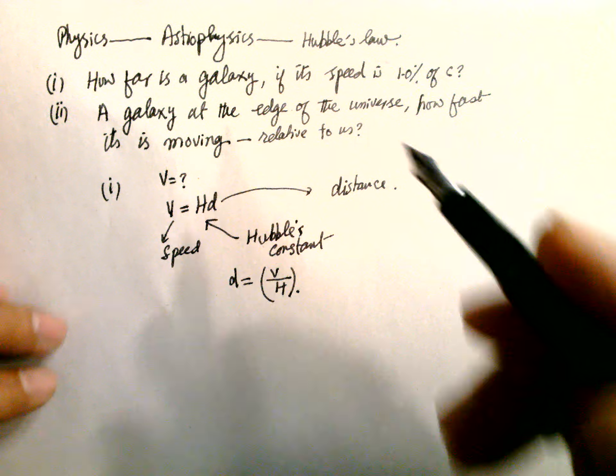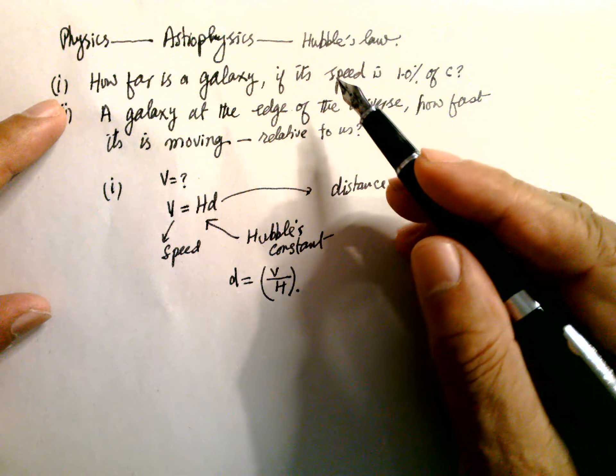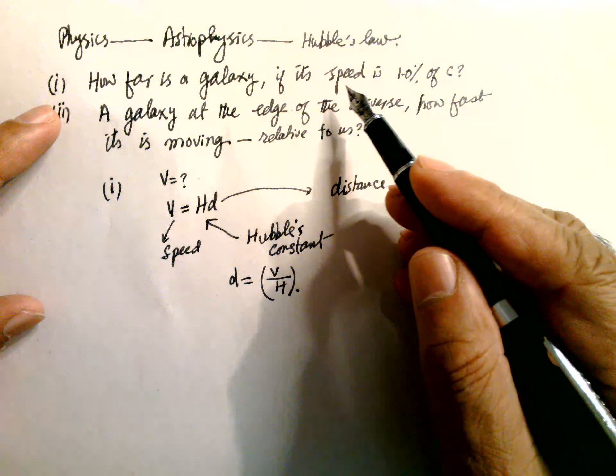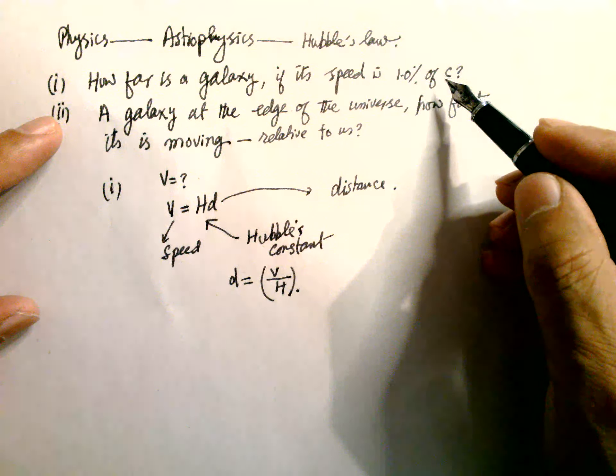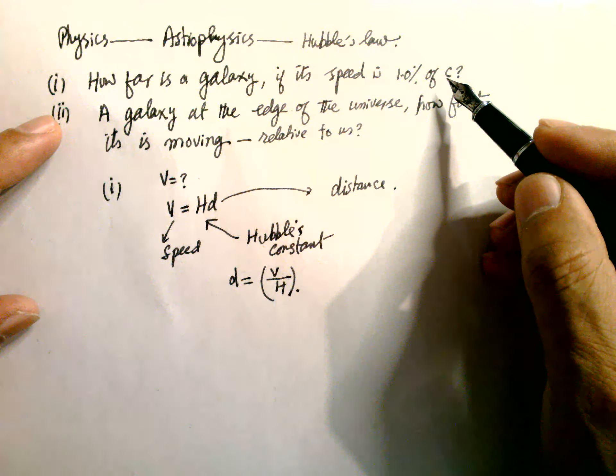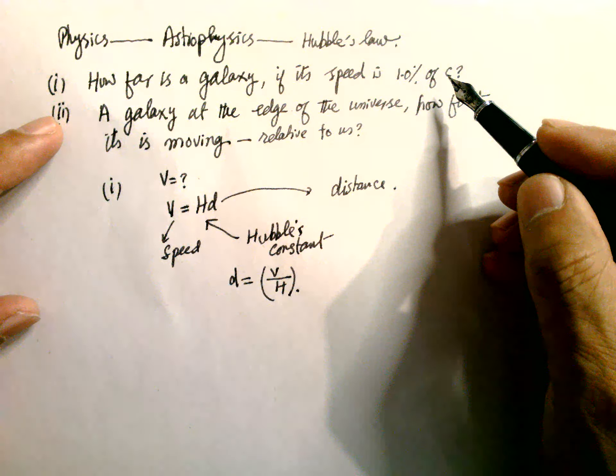Hello, Physics, Astrophysics, Hubble's Law. The question is: how far is a galaxy if its speed is 1% of speed of light, C? So we have to find its distance from Earth.